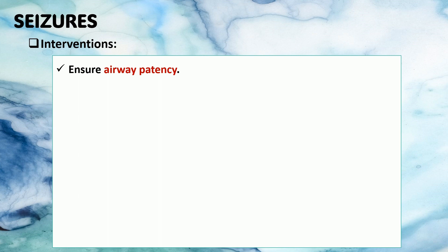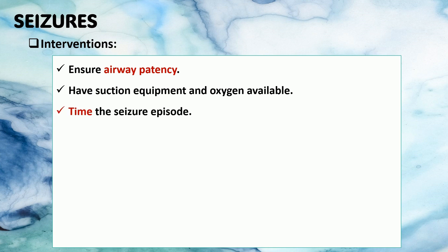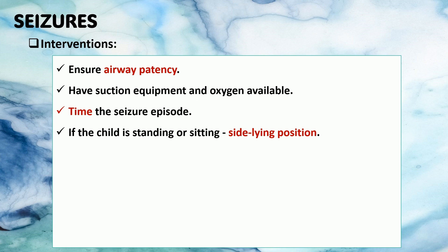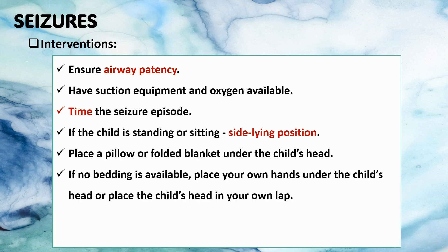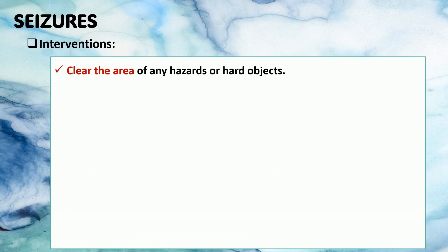Here are the interventions for seizure. Ensure airway patency. Have suction equipment and oxygen available. Note the time of the seizure episode. If the child is standing or sitting, ease the child down to the floor and place the child in a side-lying position. Place a pillow or folded blanket under the child's head. If no bedding is available, place your own hands under the child's head or place the child's head in your lap. Loosen restrictive clothing. Remove eyeglasses from the child if present.